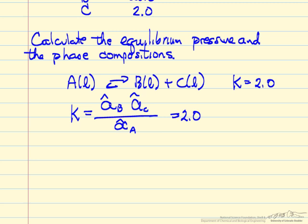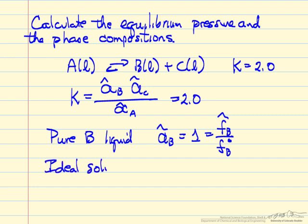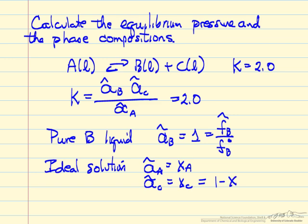Because liquid B does not mix with A and C, it means we have pure B liquid present, and its activity in this problem is 1. This is because the activity is the fugacity of B over the fugacity of pure B at the same temperature and 1 bar pressure, which is very close to 1. Because we assume an ideal solution for A and C, the activity of A is the mole fraction of A, and the activity of C is the mole fraction of C, which is 1 minus the mole fraction of A, because B is in a separate liquid phase and does not mix.